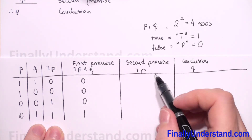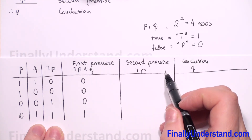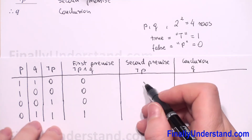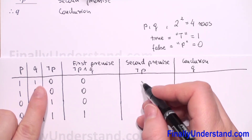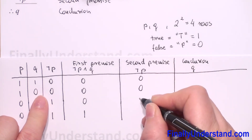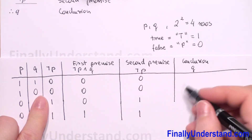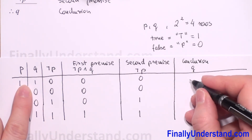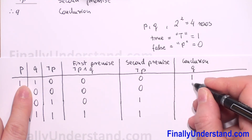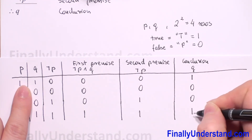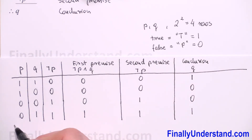Next we have to write the truth values for the second premise. We have not-p, so we can just copy our third column: 0, 0, 1, 1. And the conclusion is q, so we copy the second column: 0, 1, 0, 1. This is our truth table for this argument.